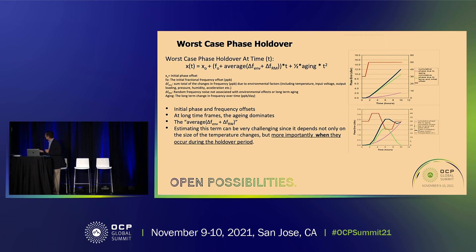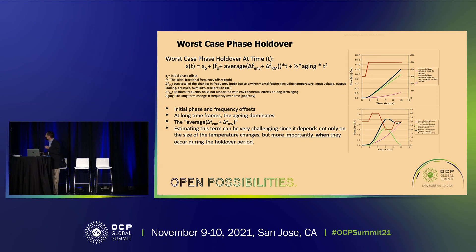This graph shows some unpredictable behavior during holdover — just as an example. The top curve shows temperature. During the initial stage, there's an error increase, but after a certain time the oscillator becomes quite stable with temperature change. With temperature variation, the error may even reduce. This illustrates how those factors impact holdover capacity in a nonlinear way.